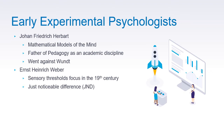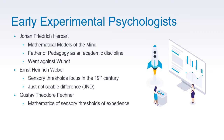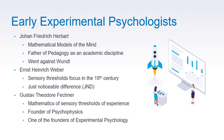Gustav Theodor Fechner introduced the mathematics of sensory thresholds of experience. He is the founder of psychophysics and is considered one of the founders of experimental psychology. He also introduced the Weber-Fechner law, which was the first to relate sensation and stimulus — a psychophysical method.